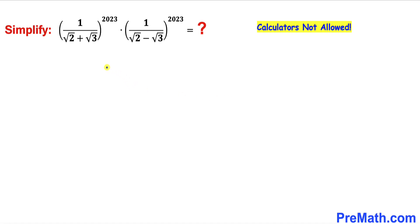Welcome to pre-math. In this video we are going to multiply and simplify this given expression: 1 divided by square root of 2 plus square root of 3, whole power 2023, times 1 divided by square root of 2 minus square root of 3, whole power 2023.